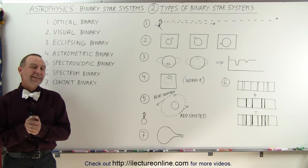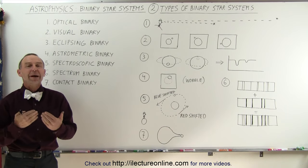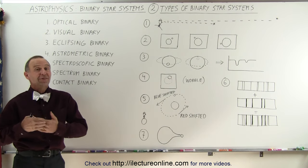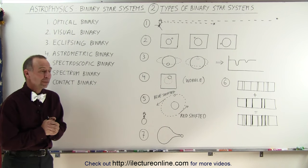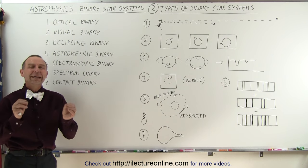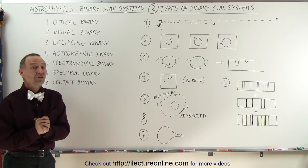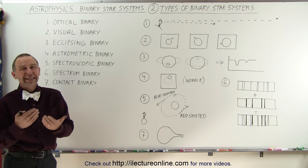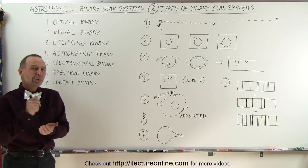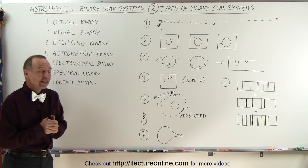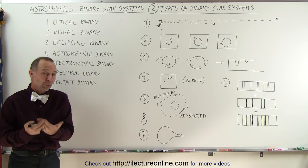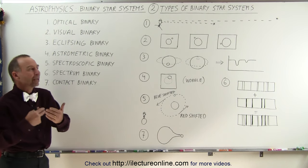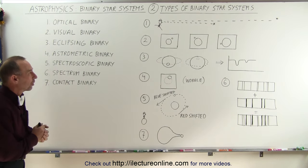Welcome to our lecture online. Let's talk about the different kinds of binary star systems that we could see, or in some cases detect in certain ways. Not all binary star systems have just two stars. Sometimes systems with three or four stars were also called binary star systems, but more recently binary star systems have been allocated to where we have just two stars in the system.